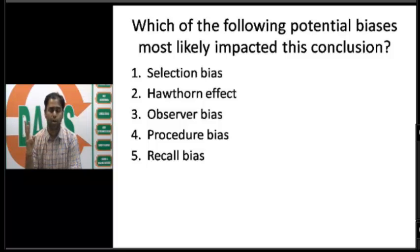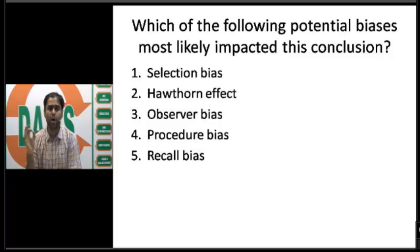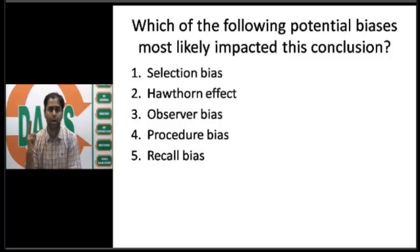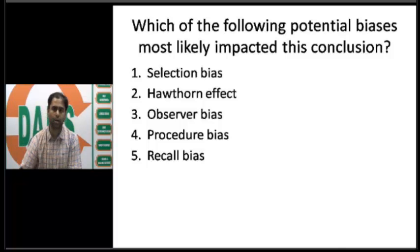Observer bias happens during the time of data collection and might be the answer. Procedure bias depends on how the study has been conducted — it can happen at the time of recruitment or during data collection, so it may also be the answer. So the answer is either option three or four. Option five, recall bias, is typically seen in a case-control study, so it would not be the answer.